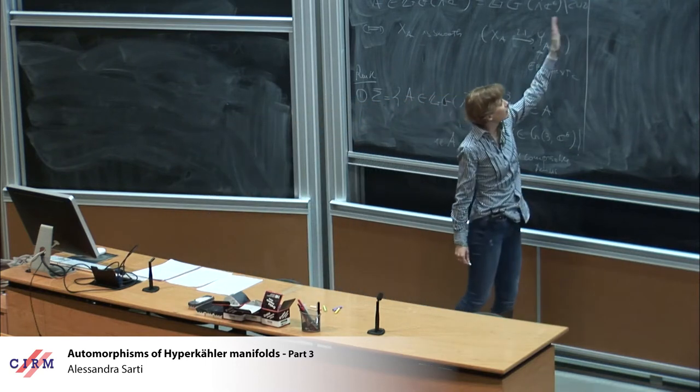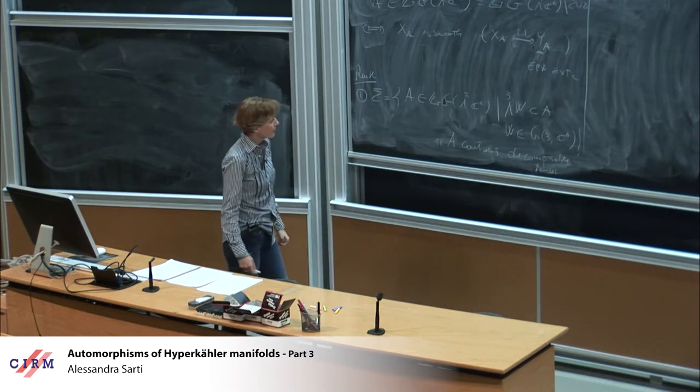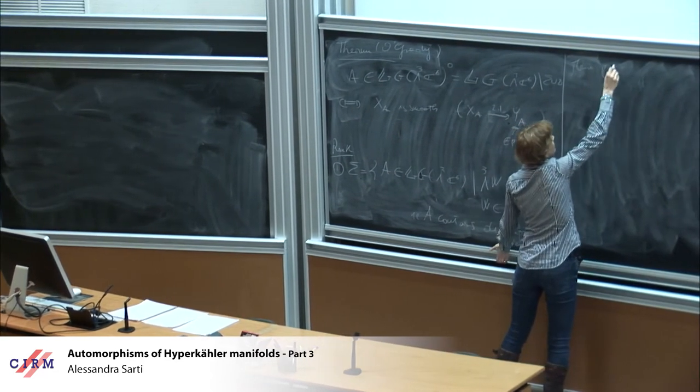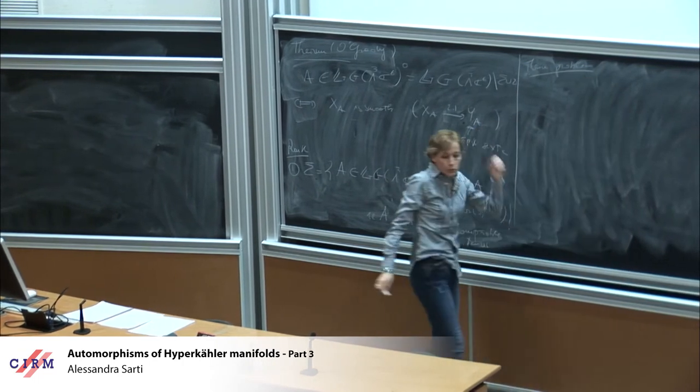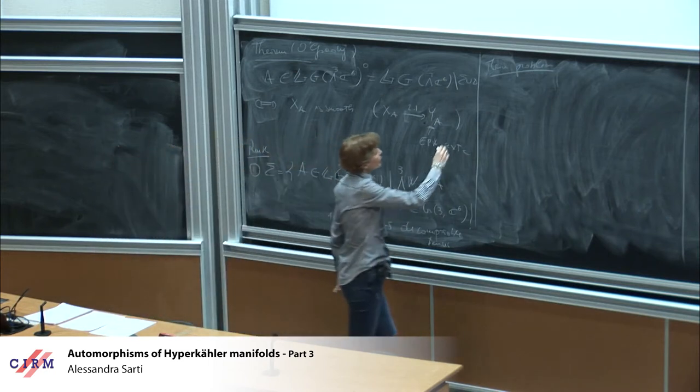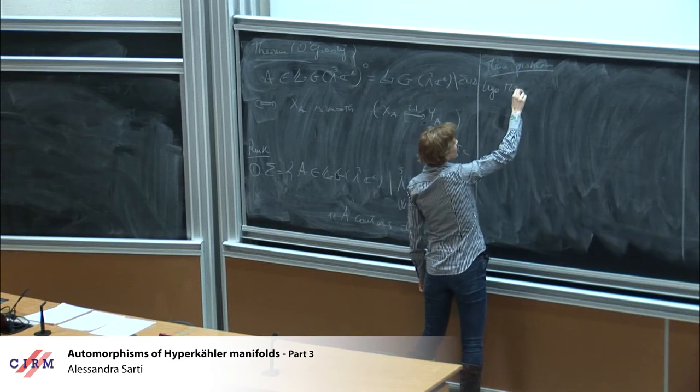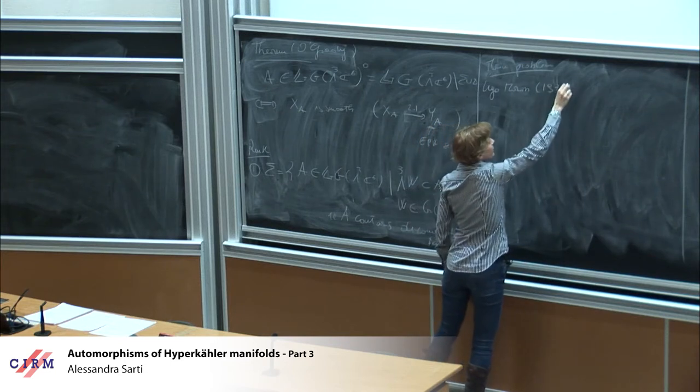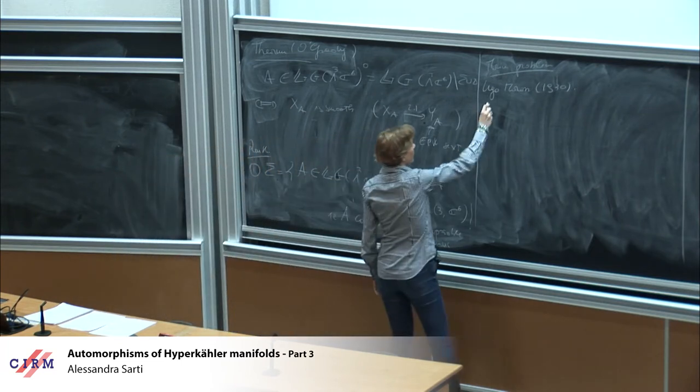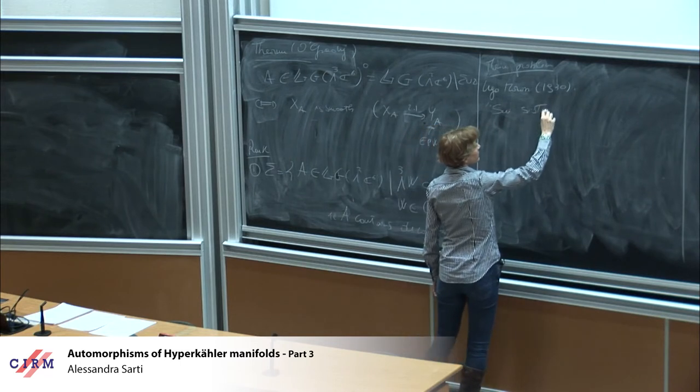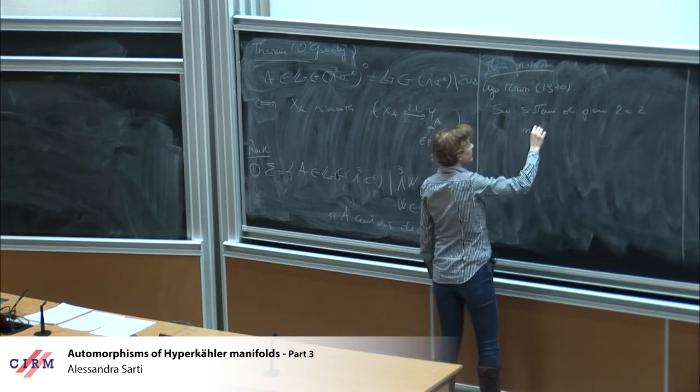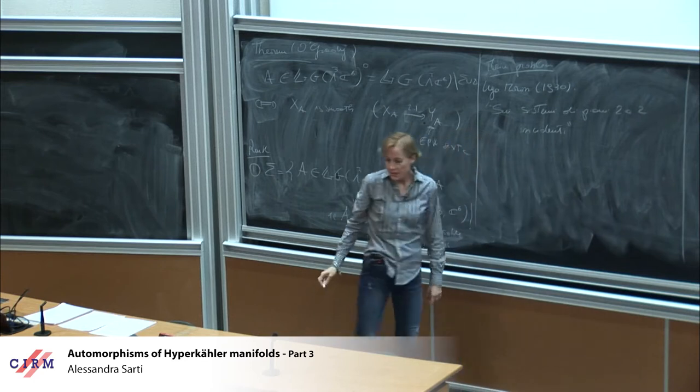But this is important for Morin's problem, so let's go to that. So what is the Morin problem? So this is a very old problem in classical algebraic geometry, and it was formulated by Hugo Morin in 1930.